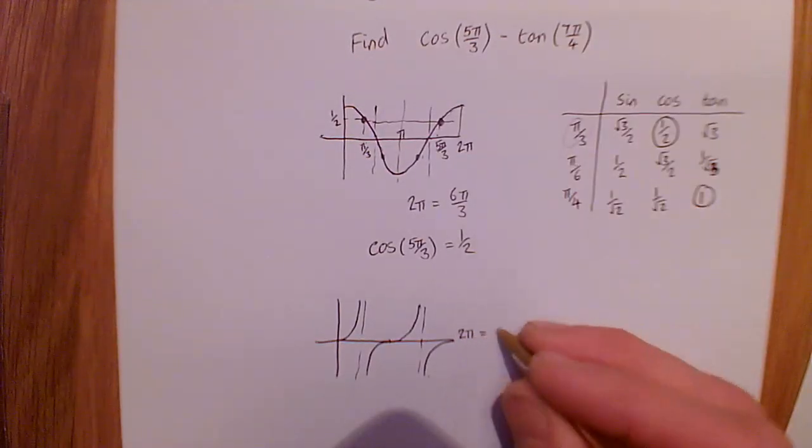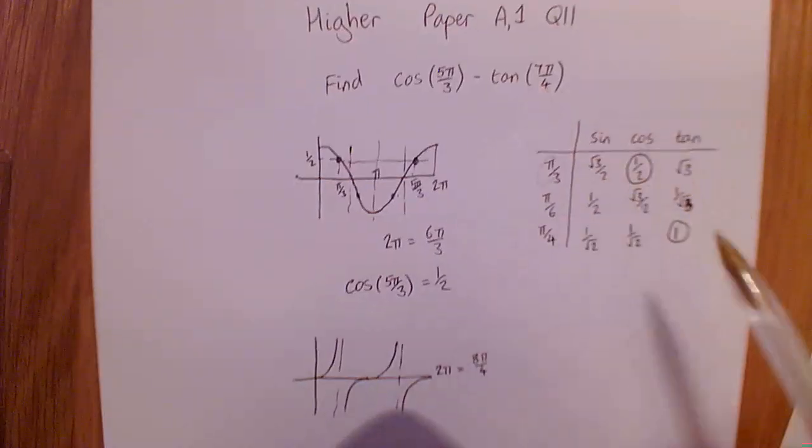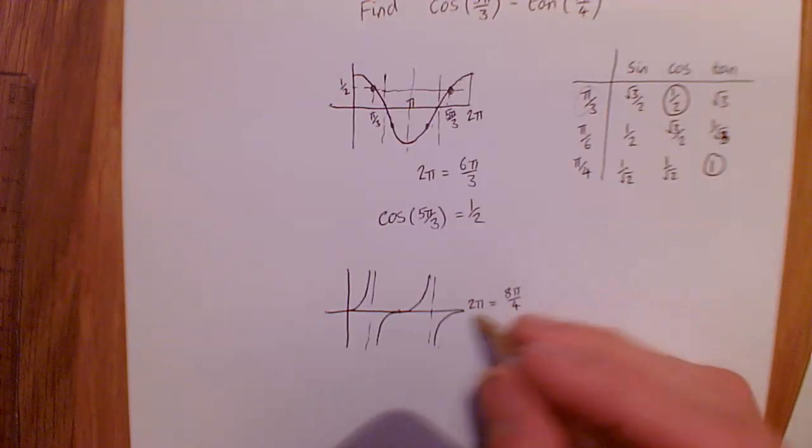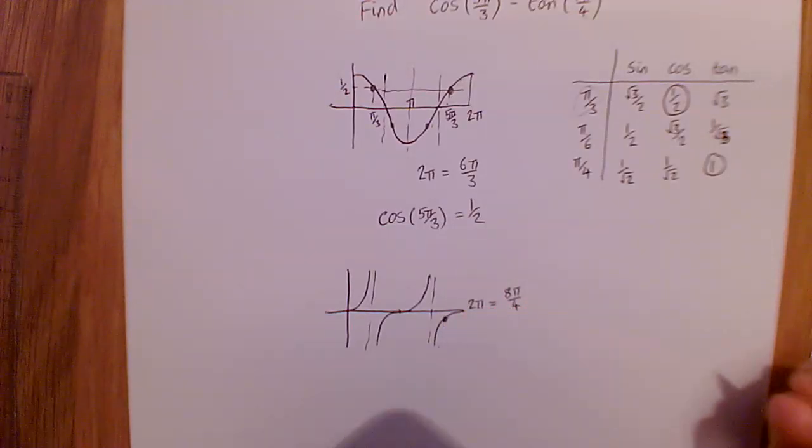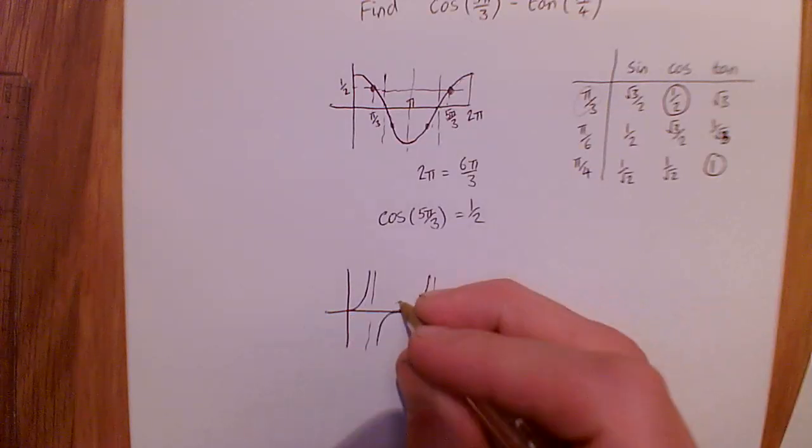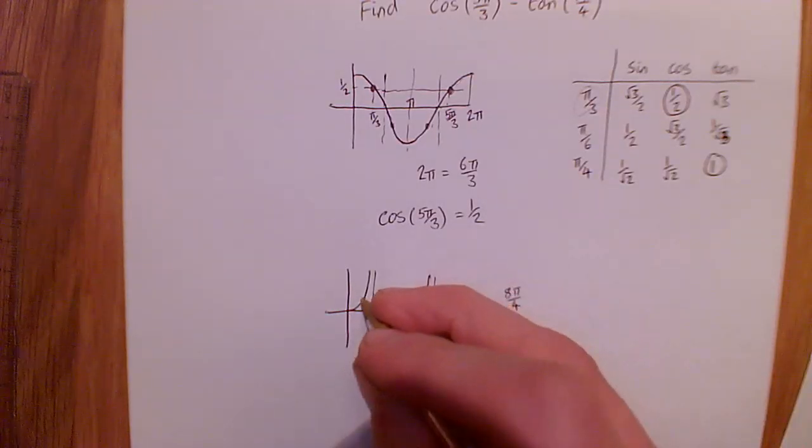So 7π/4 is just 1 π/4 before that, so it's going to lie about here. Just to mark on π as well. And a single π/4 got us to here.